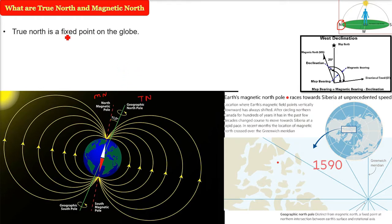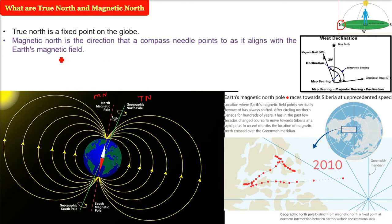So true north is a fixed point on the globe, we know it, we have already fixed it. But the magnetic pole, it totally depends on the magnetic field of the earth which is changing. So the magnetic north is the direction that a compass needle points to as it will align with the earth's magnetic field.